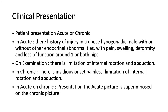The patient may present as an acute or chronic case. In an acute case, an obese hypogonadic male with or without endocrinal abnormalities presents with pain, swelling, deformity, and loss of function around one or both hips following mild injury. On examination there is limitation of internal rotation due to posterior slip of the physis, and limitation of abduction due to inferior slip. In a chronic case there is insidious onset, painless limitation of internal rotation and abduction, without the acute picture. Sometimes the acute picture can superimpose on the chronic, which is called acute-on-chronic presentation.